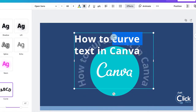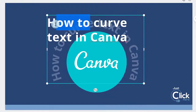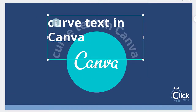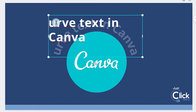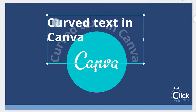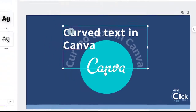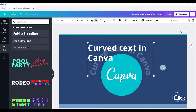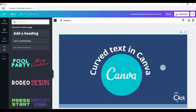If you want to edit your text, double click on it and a box showing your text will appear over your curved text. It might look a bit weird, but all you need to do is make any edits that you want and then just click away, and your curved text will update.